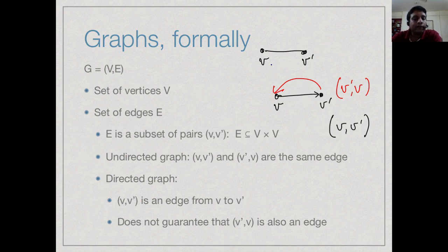In an undirected graph, it is just a pair of vertices — it does not matter whether we think of it as V to V prime or V prime to V. It is just a connection between these two vertices.